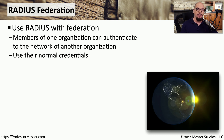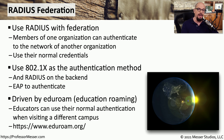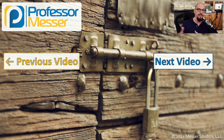You might also use EAP in conjunction with Federation. Federation is when you can link a user's identity across multiple authentication systems. This is commonly used if you're at a third-party location and would like to authenticate using credentials that were created for a different location. RADIUS Federation commonly uses 802.1x as the authentication method, so you're using EAP to authenticate and commonly authenticating to a RADIUS server on the back end. A common implementation of RADIUS Federation can be found with Eduroam, which was built so that educators visiting a different campus could use their original username and password to authenticate regardless of which campus they travel to.